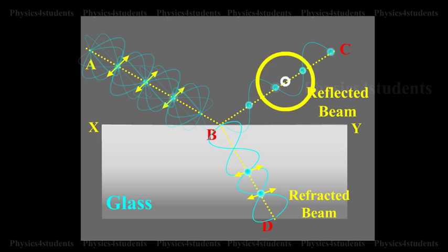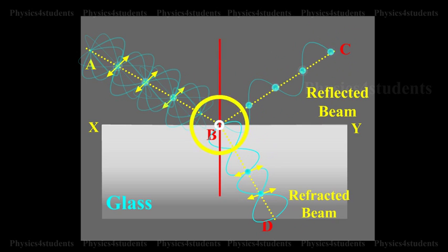A part of the light is reflected along BC and the rest is refracted along BD. On examining the reflected beam with an analyzer, it is found that the ray is partially plane polarized.